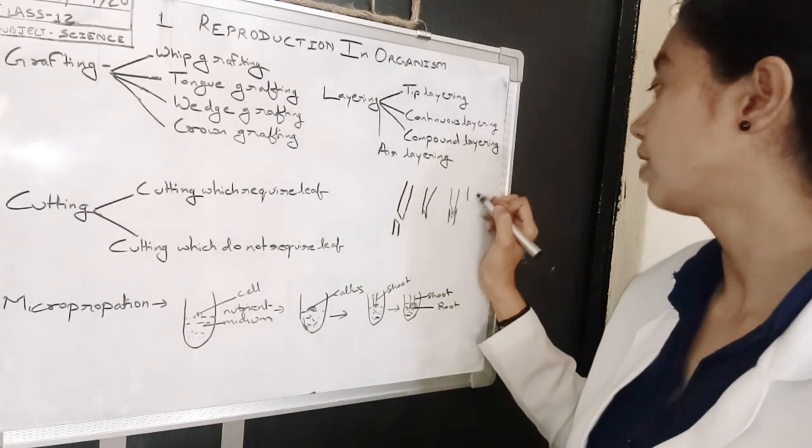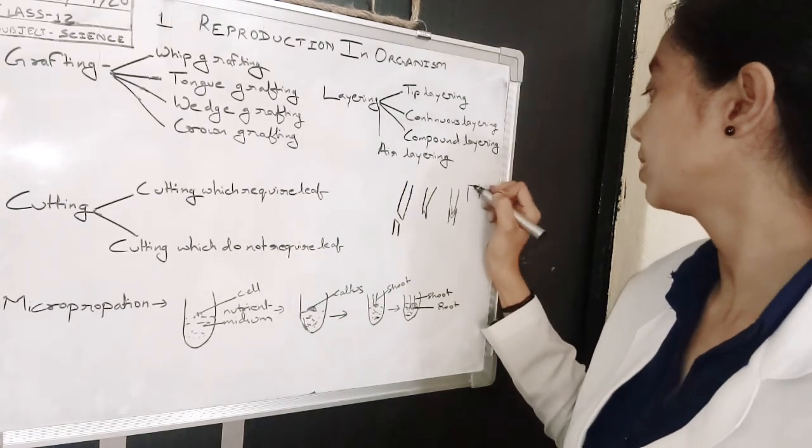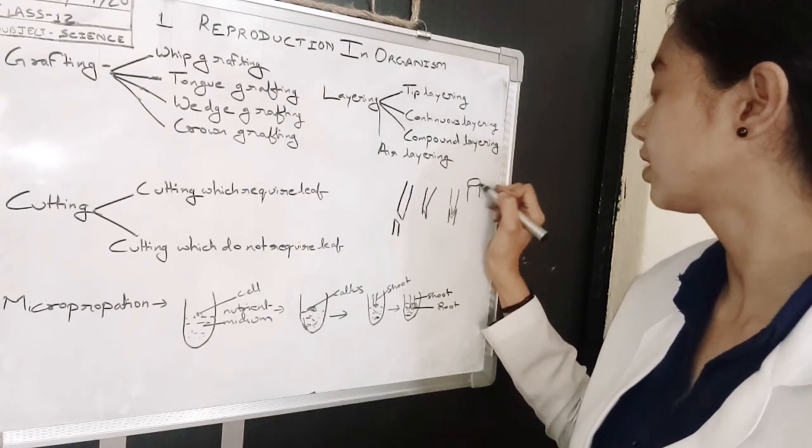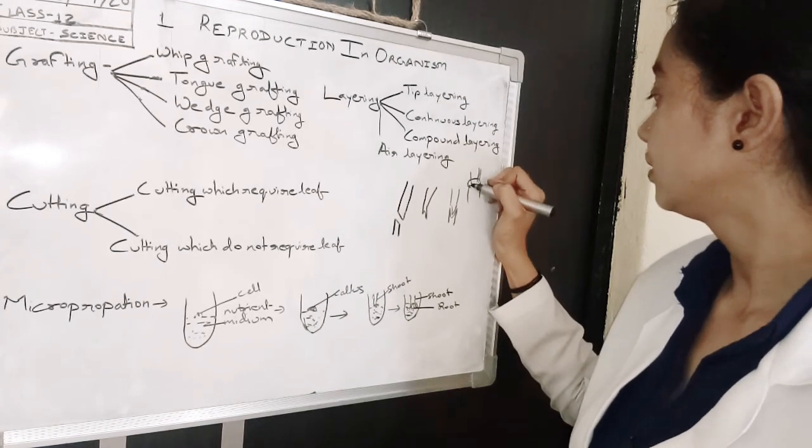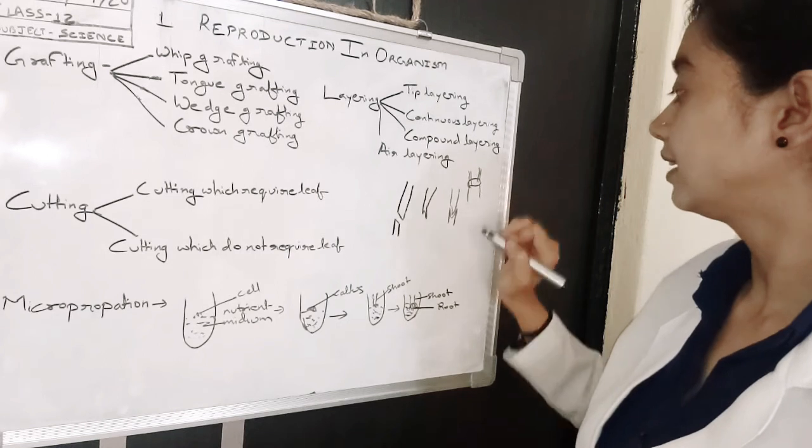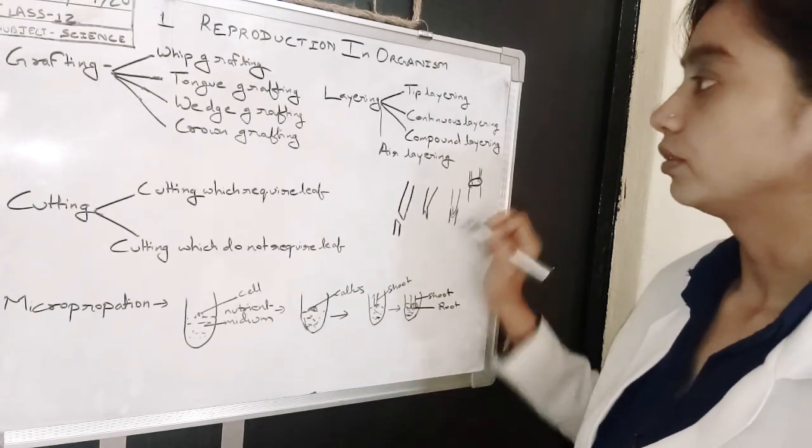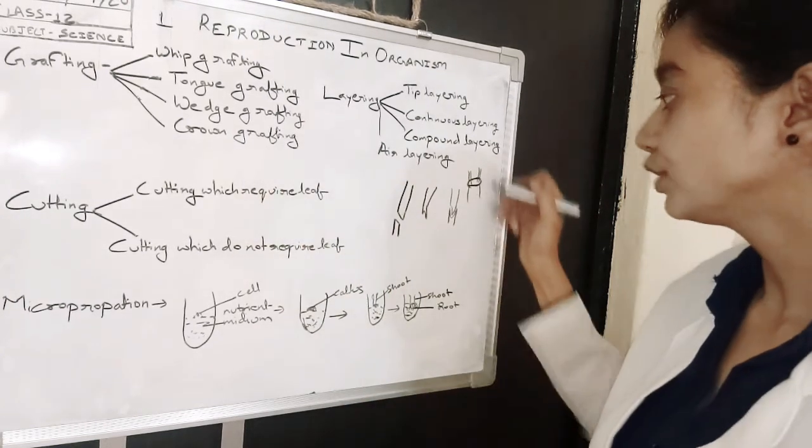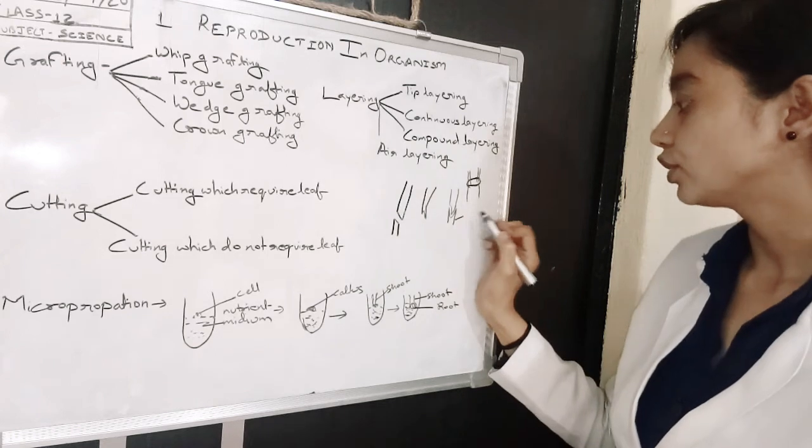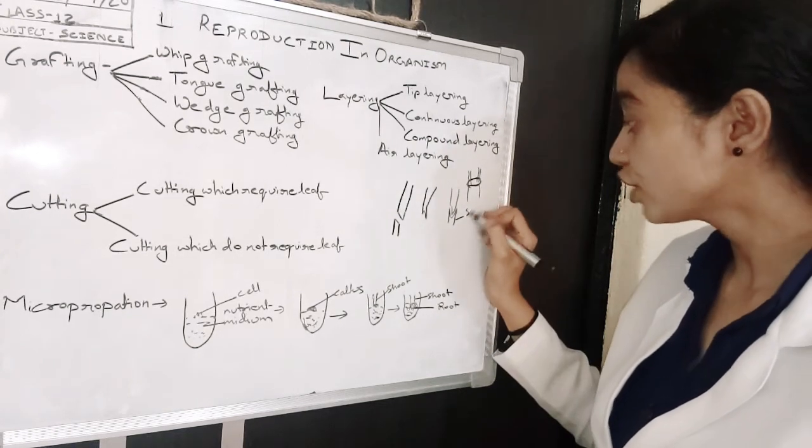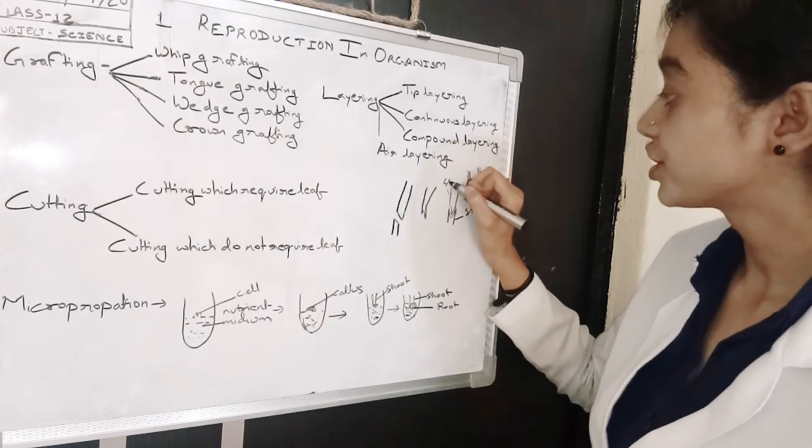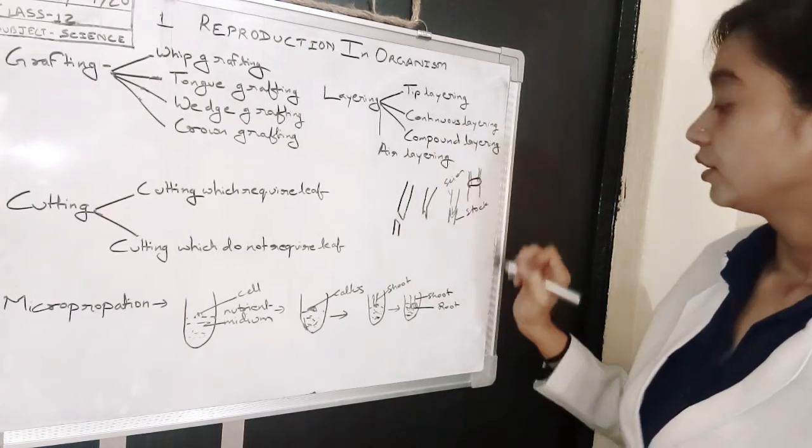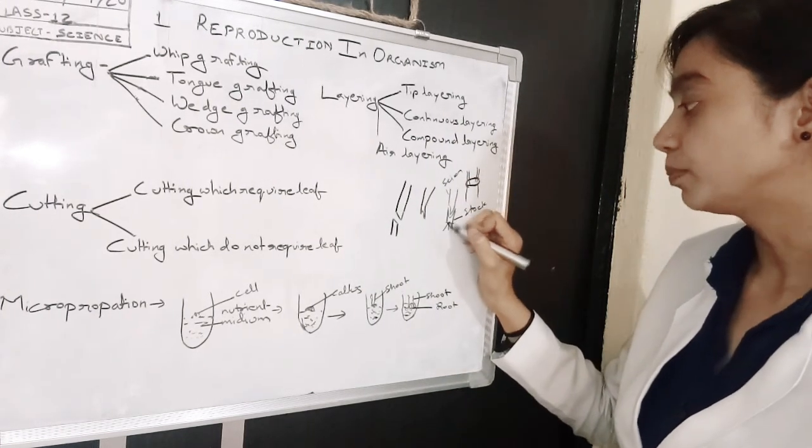Crown grafting - in crown grafting you take the stem in this manner like a crown, and in the upper portion you take another shoot like this. The lower portion is called stock and the upper portion is called scion. The stock has the root portion also.